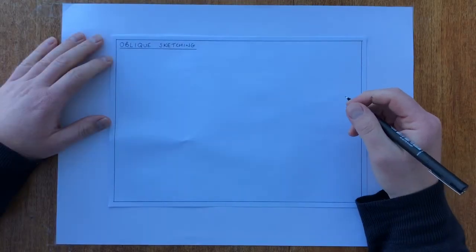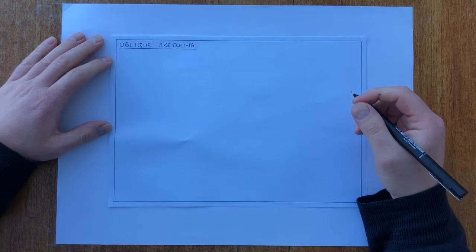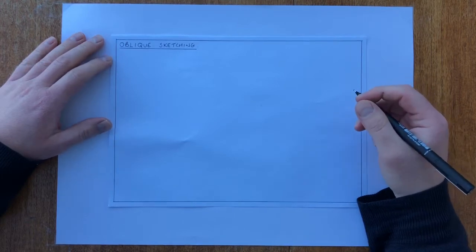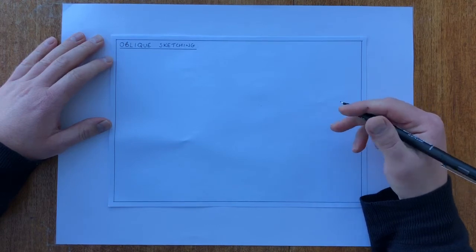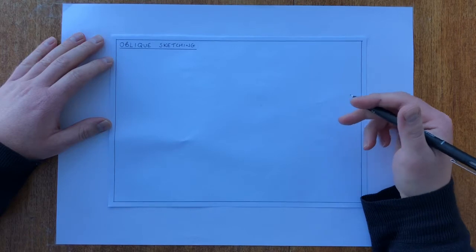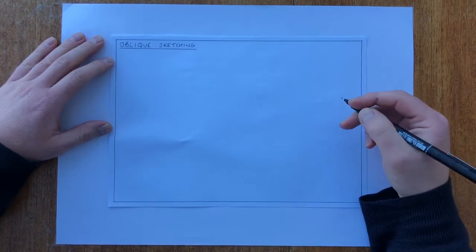Welcome and today in this video we're going to look at how we introduce oblique sketching to S1 pupils. The main thing we need to learn when we look at oblique sketching is that it's drawn to certain rules like we've talked before with other drawing techniques and for oblique sketching lines are drawn at 45 degrees.